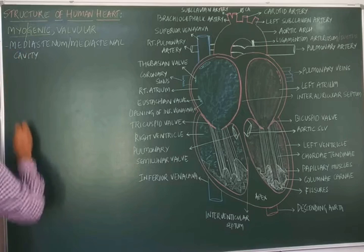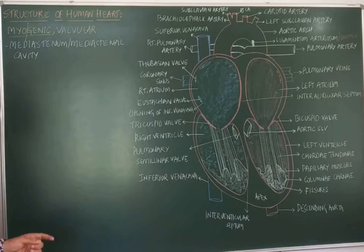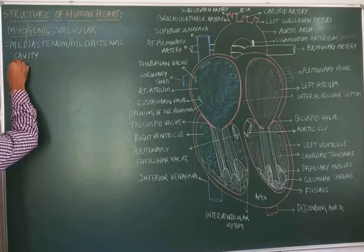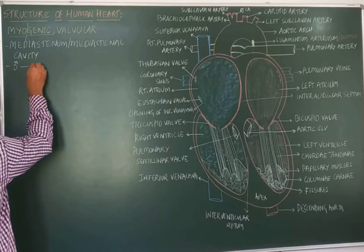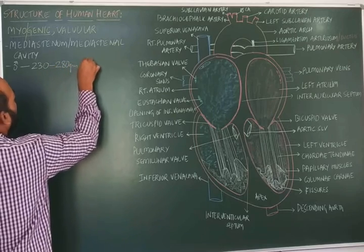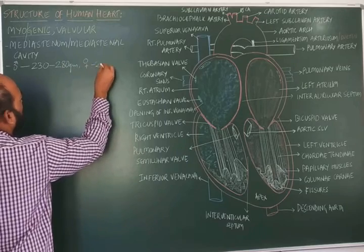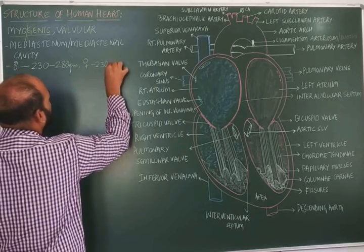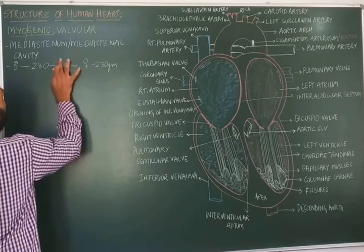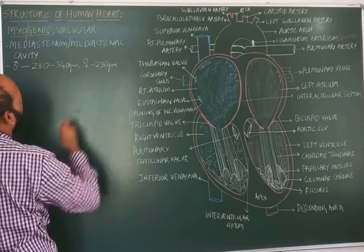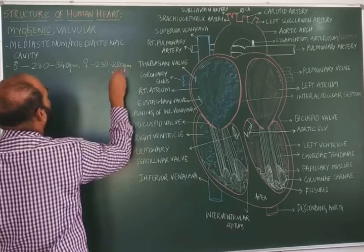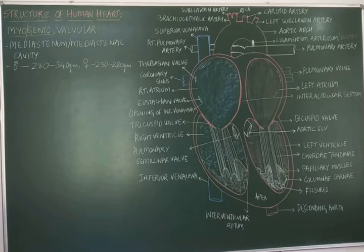The weight of the human heart varies between males and females. In males it is around 282–340 grams, whereas in females it weighs around 232–280 grams. That is the weight of the human heart.